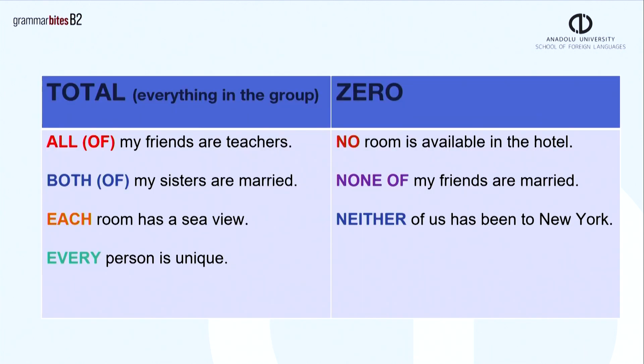Let's summarize the quantifiers according to their meaning. In this chart, you can see two categories, total and zero. In the total parts, we have all of, both of, each and every. In the zero category, we have no, none of and neither.